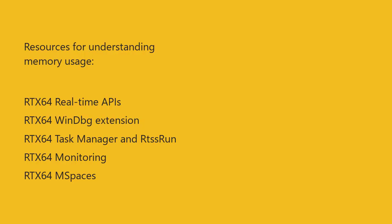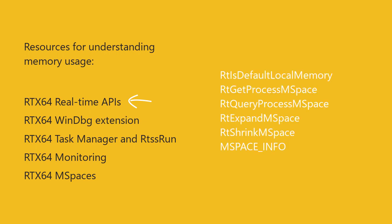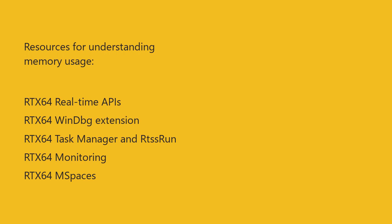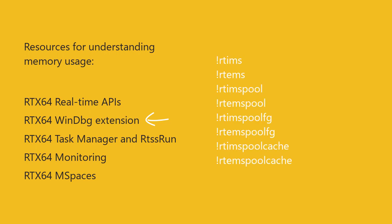RTX 64 provides several tools and enhancements that will help you better understand memory usage so that you can optimize the local memory mspaces to suit your application's requirements. Real-time APIs have been expanded to support mspace expansion and shrinking and for querying usage and fragmentation information. The RTX 64 WinDebug extension has been expanded to include information on mspaces and memory allocations for the subsystem, networking components, and each real-time process.